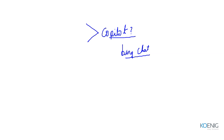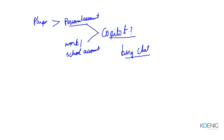You can sign into GoPallet using different ways — using a Personal Account or a Work or School Account. When you sign in using your Personal Account, you have an option of plugins, which we will see later. But when you sign in using your Work or School Account, the plugin option is not visible. Also, whatever prompts you give using a Personal Account will be saved, but when you use a Work or School Account, the prompts are not going to be saved.